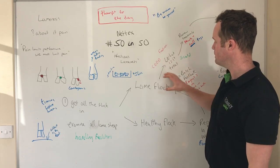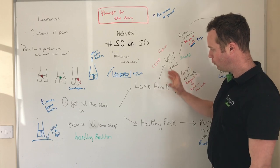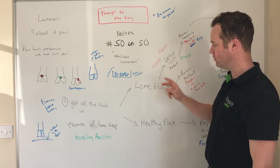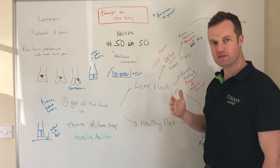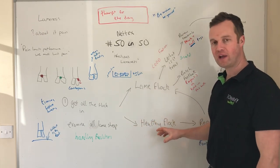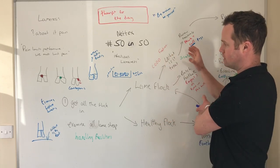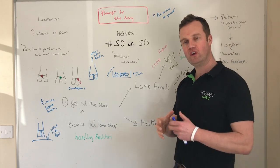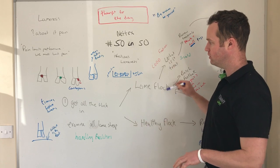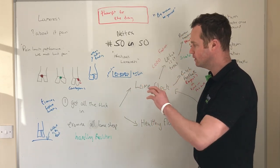Once you've established the cause and decided on treatment for your lame flock, begin foot bathing straight away for both flocks. For the lame flock it acts almost as a treatment; for the healthy flock you may have missed some carriers. When these two things work together — treating the lame flock and foot bathing the healthy flock — it reduces the infectious agents that can spread and continue the cycle.